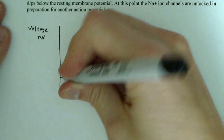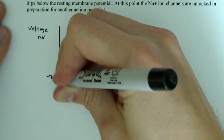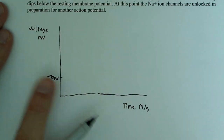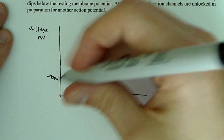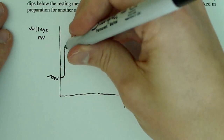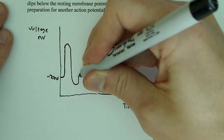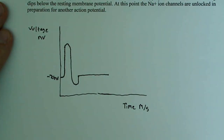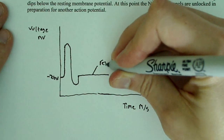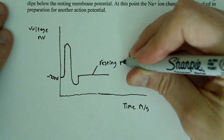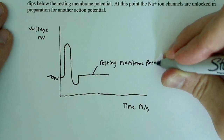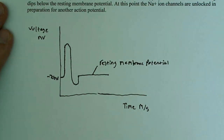Let's arbitrarily assign a point here and call it negative 70 millivolts, which is usually close enough to resting membrane potential. So this region of the graph represents resting membrane potential.